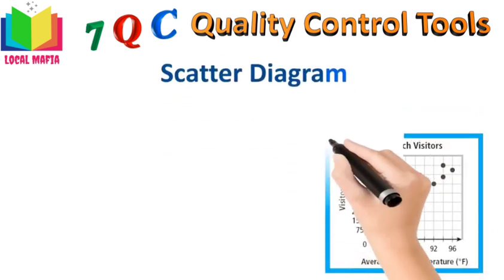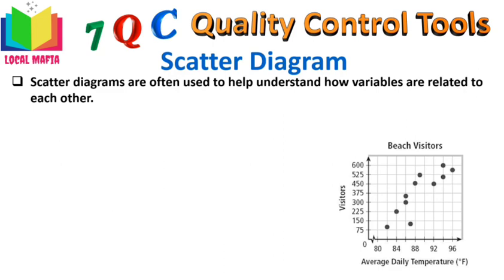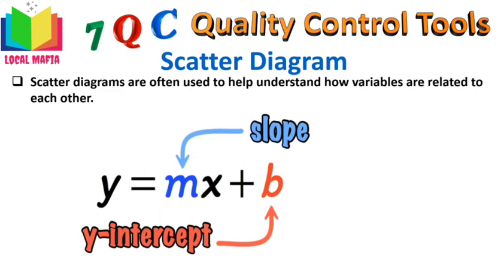Scatter diagrams: Scatter diagrams are used to help understand how two variables are related to each other. For example, if you want to understand the relationship between the number of visitors and average daily temperature on a beach, you plot all the data points to see the relationship. The independent variable (temperature) is plotted on the X axis and the dependent variable on the Y axis. This relationship is governed by the equation Y = MX + B, where Y is the dependent variable, M is the slope of the line, X is the independent variable, and B is the Y-intercept.